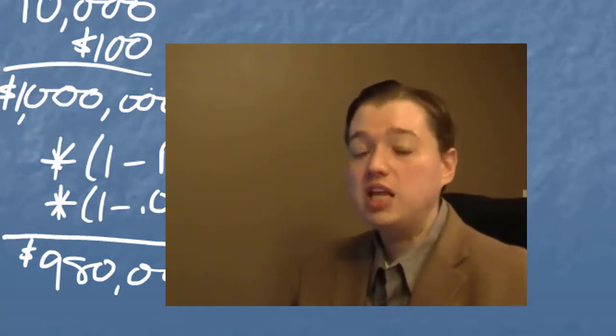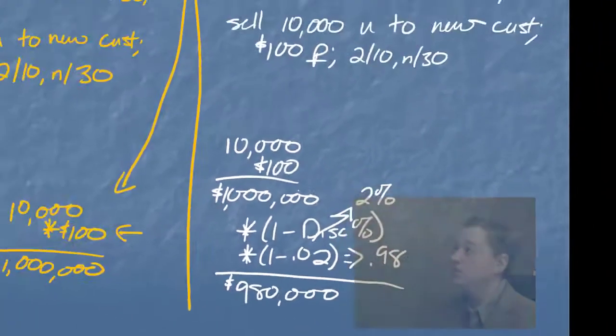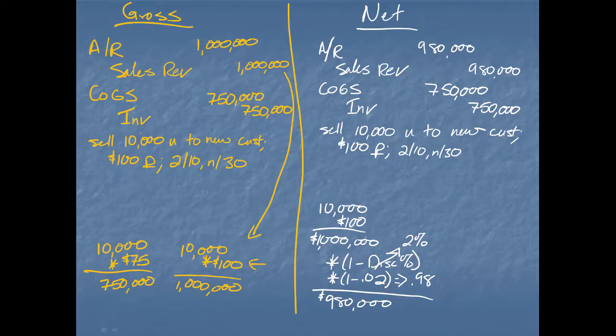We talked last time about the gross and net methods, and up here you can see the journal entries that we did to record this initial purchase for Jones Company. They had purchased 10,000 units at $100 each, that was $10 less than our normal sales price. We recorded under the gross method that they would eventually pay us the full million. Under the net method, we didn't record the full million. We recorded that $980,000, assuming that they would take that 2% discount.